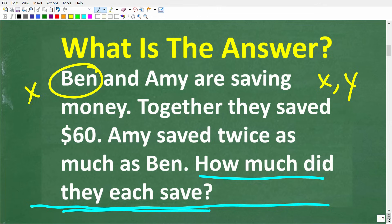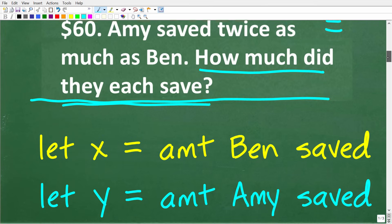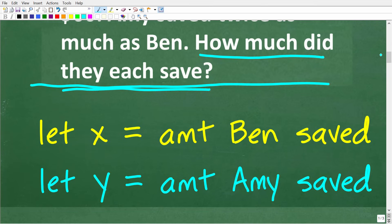If I let the variable X represent how much Ben saved and maybe we'll let the variable Y represent how much Amy saved, well we can solve this problem if we can figure out what X and Y are equal to. But you can't solve for variables in algebra unless you have an algebraic equation. So we're going to have to build some equations here and then solve for X and Y. Let's write down exactly what these variables are going to represent. We'll let X equal the amount Ben saved and then we'll let Y equal the amount Amy saved.